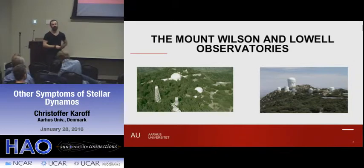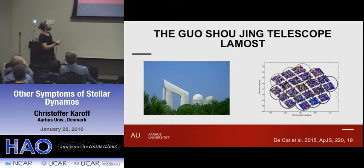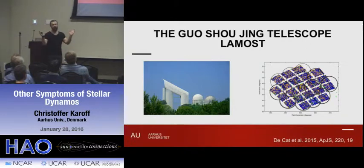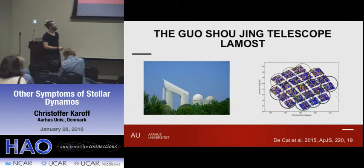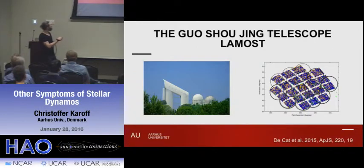The reason why I'm here, apart from giving this talk, is to collaborate with Rick and Phil and others on combining observations from the Mt. Wilson and the Lowell observatories. That's how we're used to seeing stellar activity measurements from these two observatories. What we will see today will come from this telescope in China, the Gongxioning telescope, also called LAMOST, which has surveyed a large fraction of the sky. Specifically, I looked at the Kepler field — the field observed by the Kepler satellite — with 14 different pointings of this telescope.